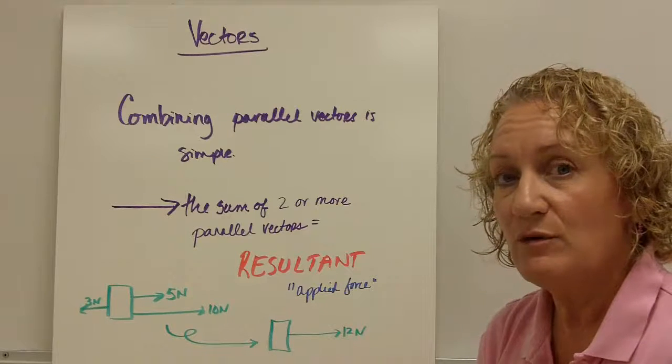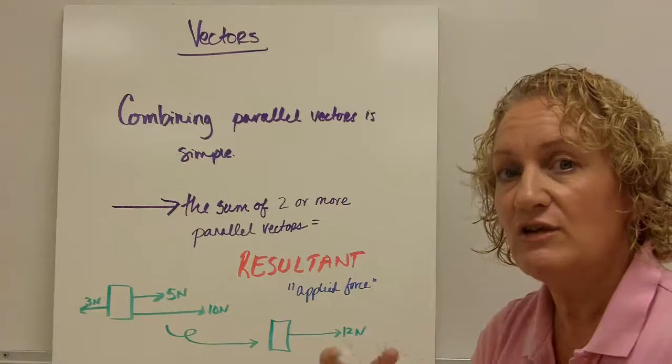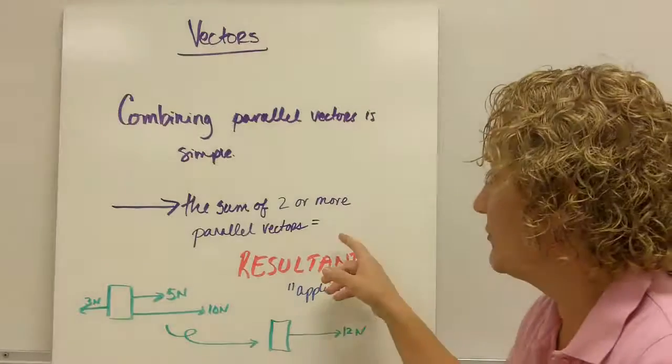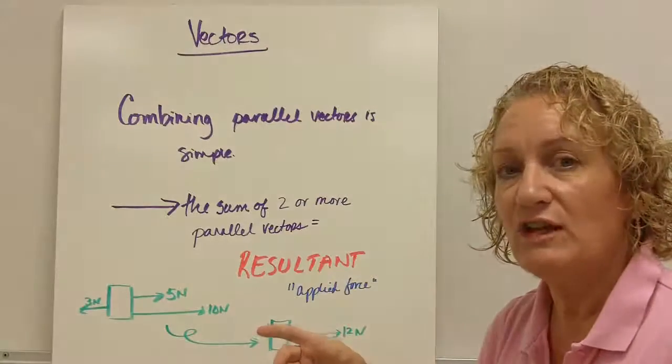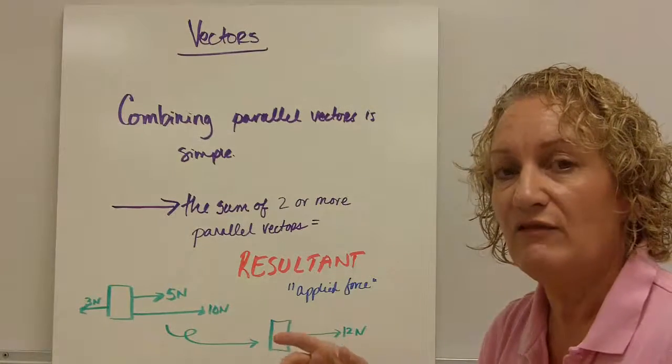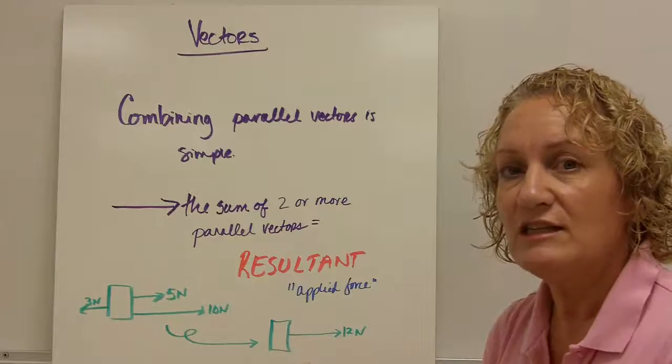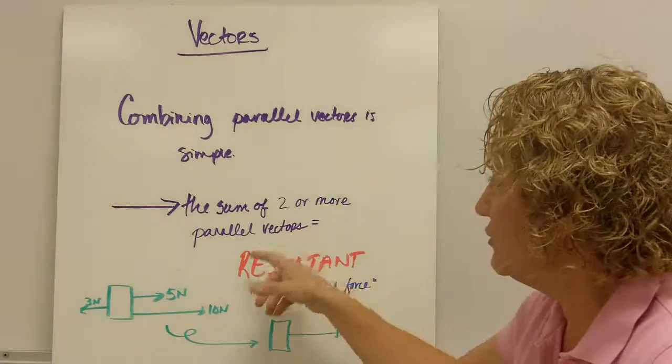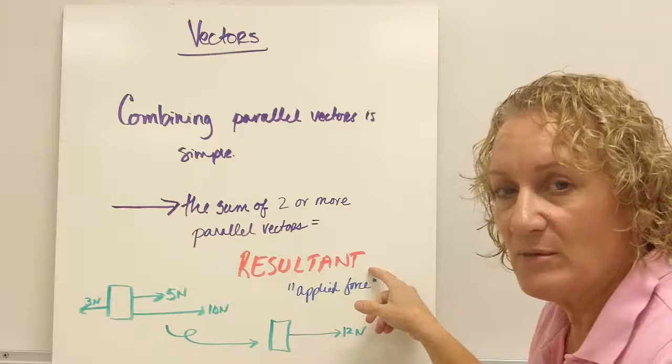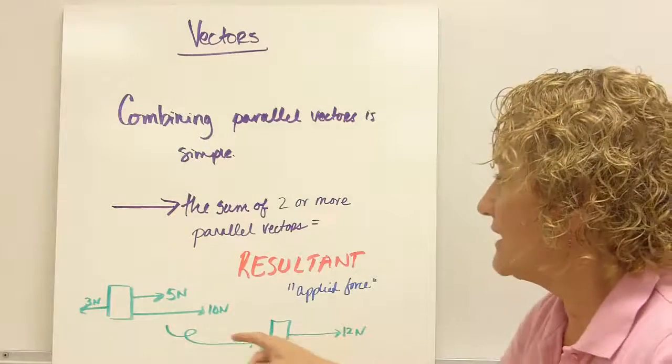The sum, though, of two or more vectors. So the answer that you get when you get two or more vectors is called the resultant. It's also, in terms of force, called the applied force. But the resultant, there's other vectors besides force vectors. So I want you to get used to the term resultant. Again, a new vocabulary word.